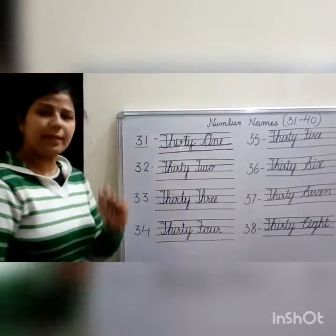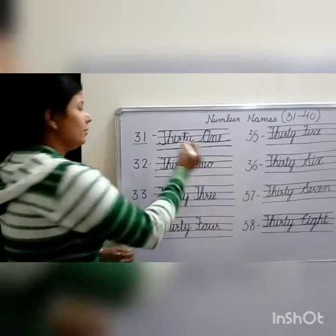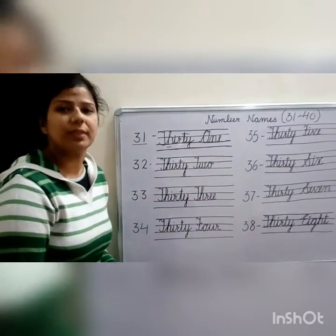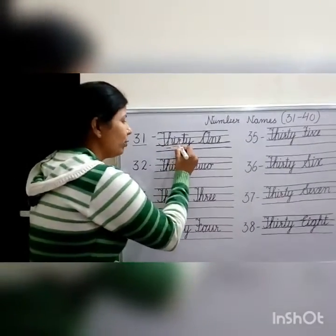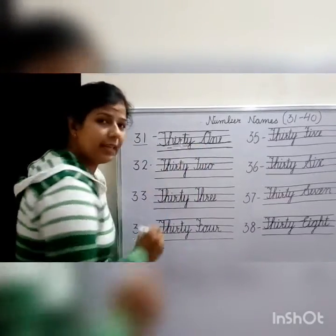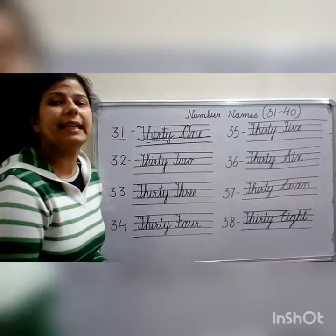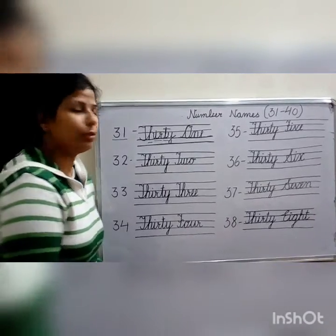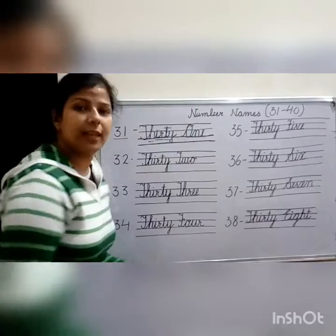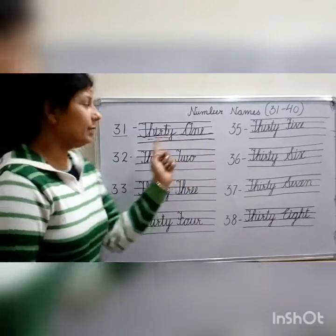Which number is this? 31. T-H makes the 'th' sound. I-R makes the 'ar' sound. T-Y at the end gives the 'ee' sound. So it's T-H-I-R-T-Y — thirty. Then O-N-E — 1. So the number name is thirty-one.